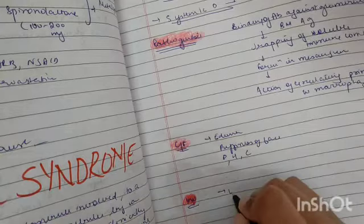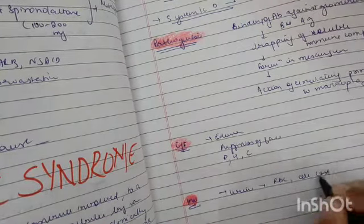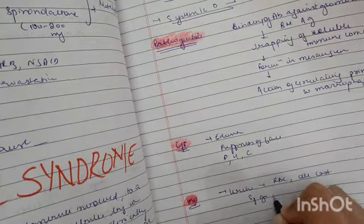In investigations, we examine the urine. In urine we see RBCs and cell casts, then check specific gravity and proteinuria.